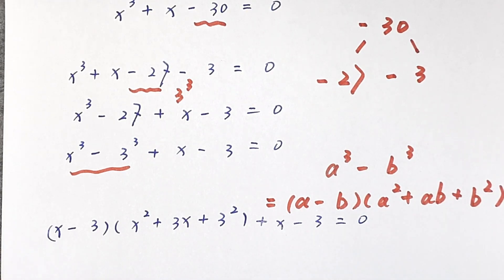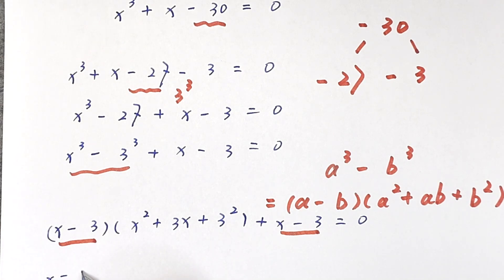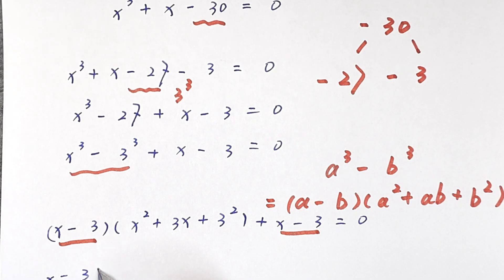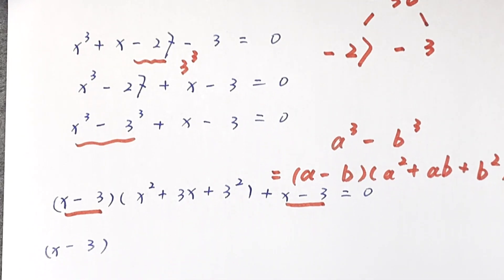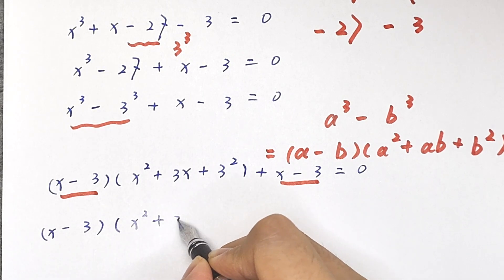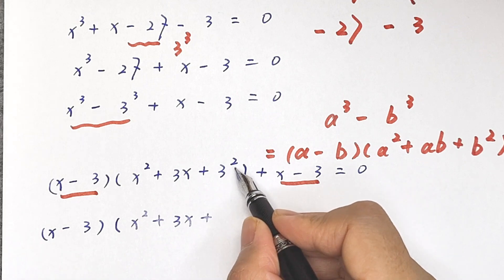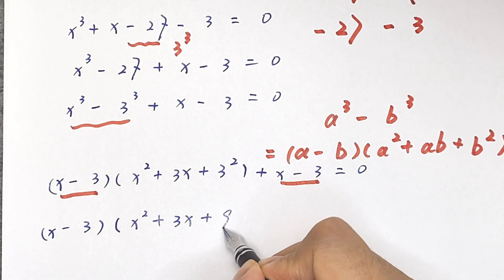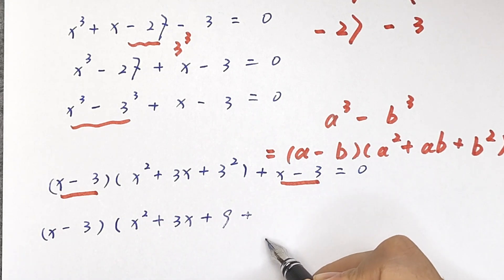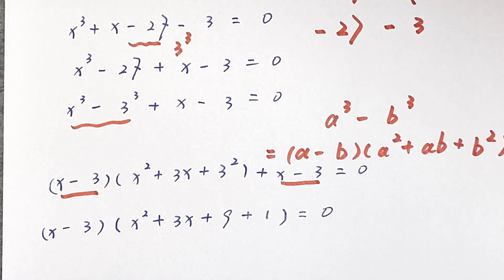Now x minus 3 is a common factor, so we take x minus 3 out of the bracket: x minus 3, times x squared plus 3x plus 9 plus 1, equals 0. That simplifies to x minus 3, times x squared plus 3x plus 10, equals 0.